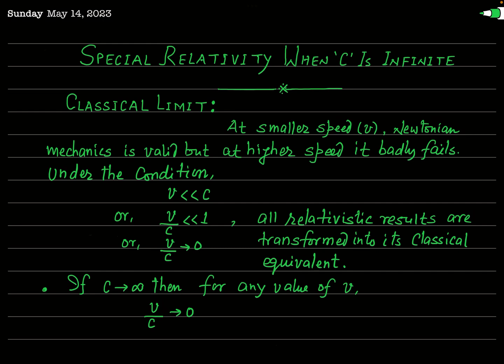On the other hand, Newtonian mechanics, or classical mechanics, is a branch of classical physics that works well for objects moving at speeds much slower than the speed of light. At higher speeds approaching the speed of light in free space, Newtonian mechanics badly fails, but at smaller speeds it works well. It is based on Newton's laws of motion, which assume that time and space are absolute — not relative — and so they are not subject to relativistic effects.